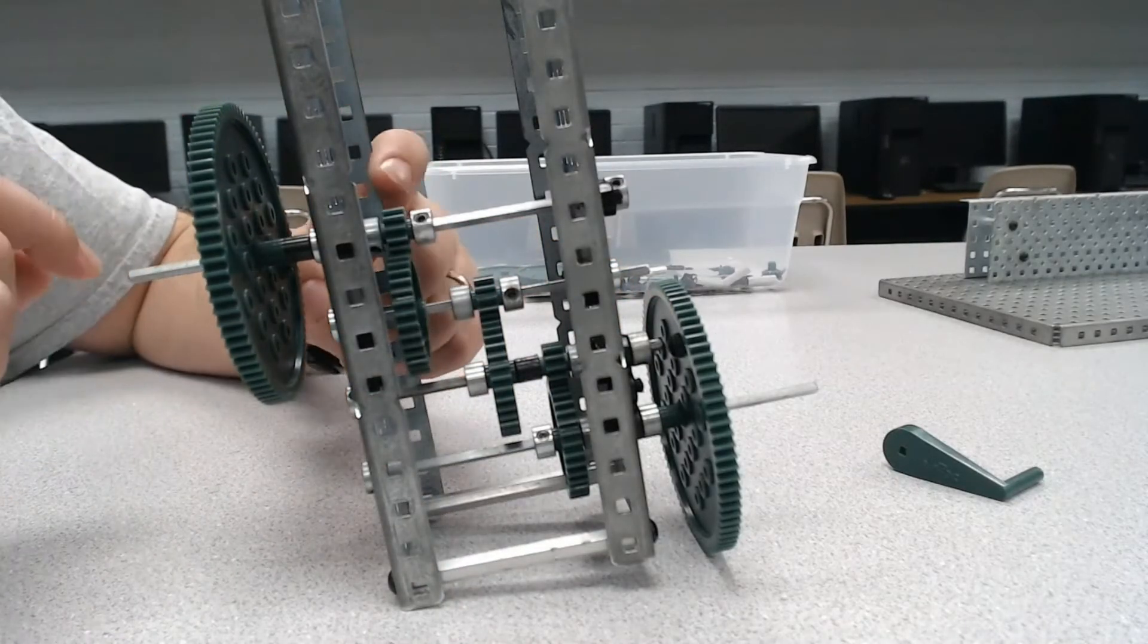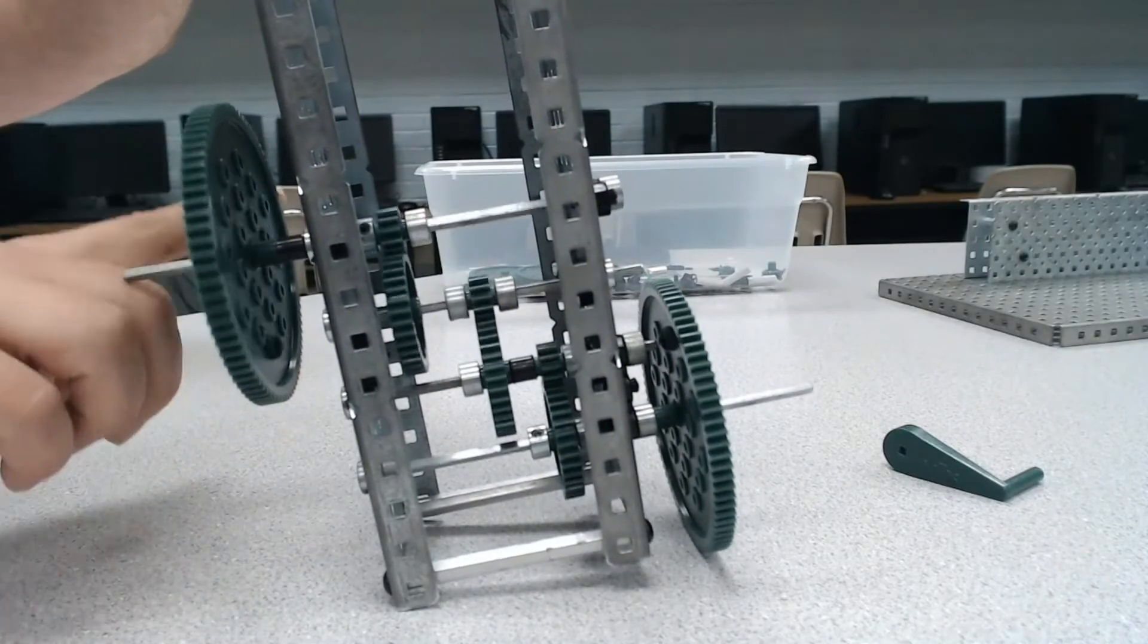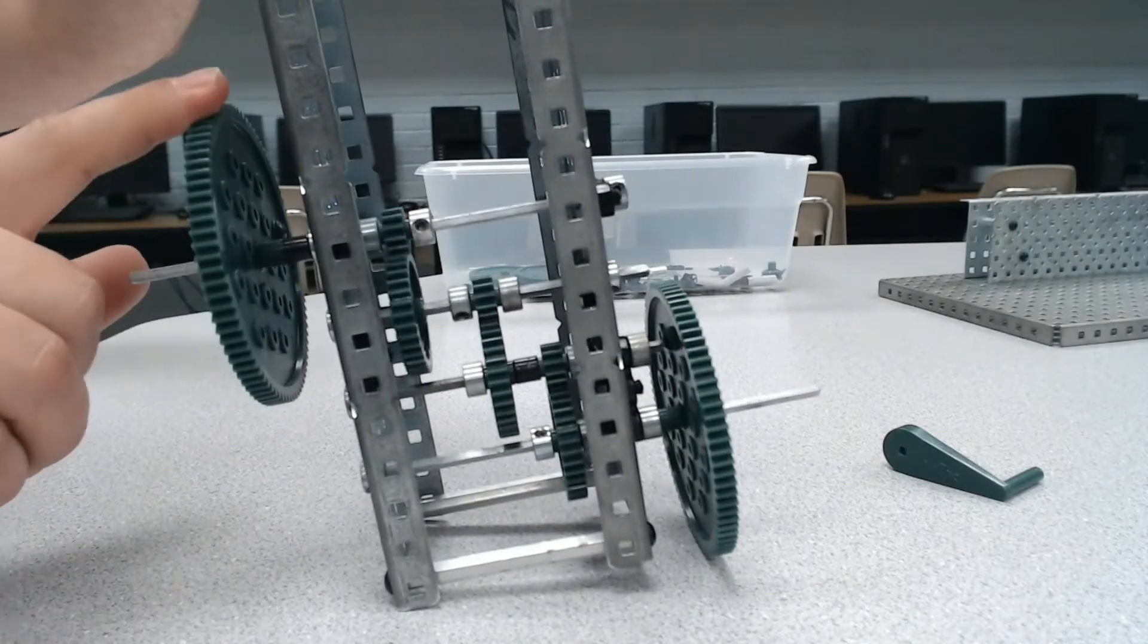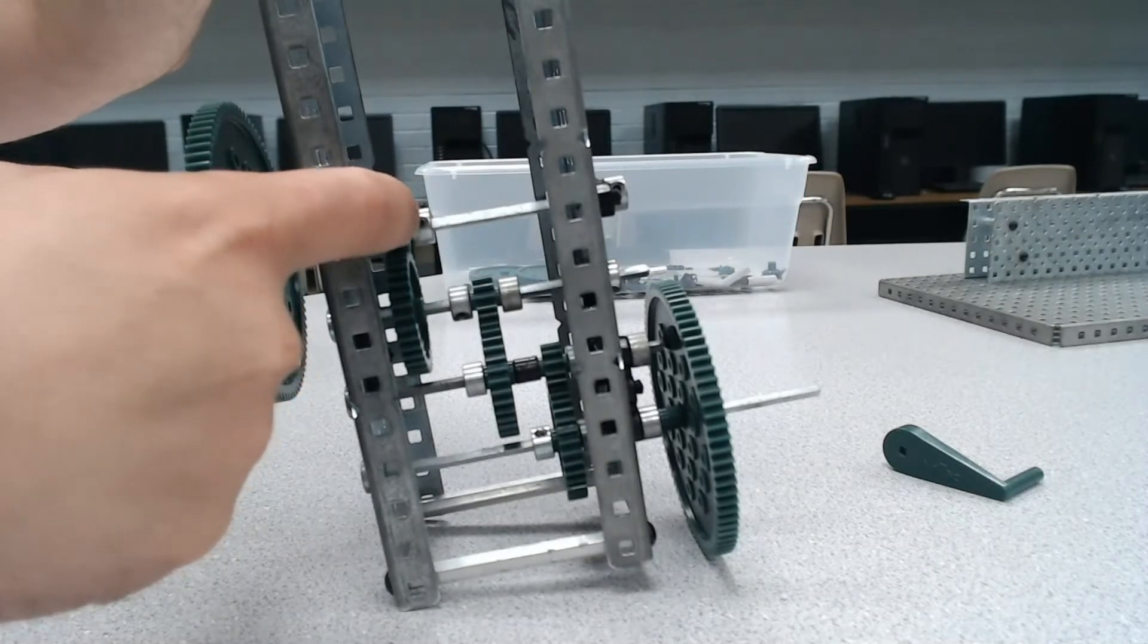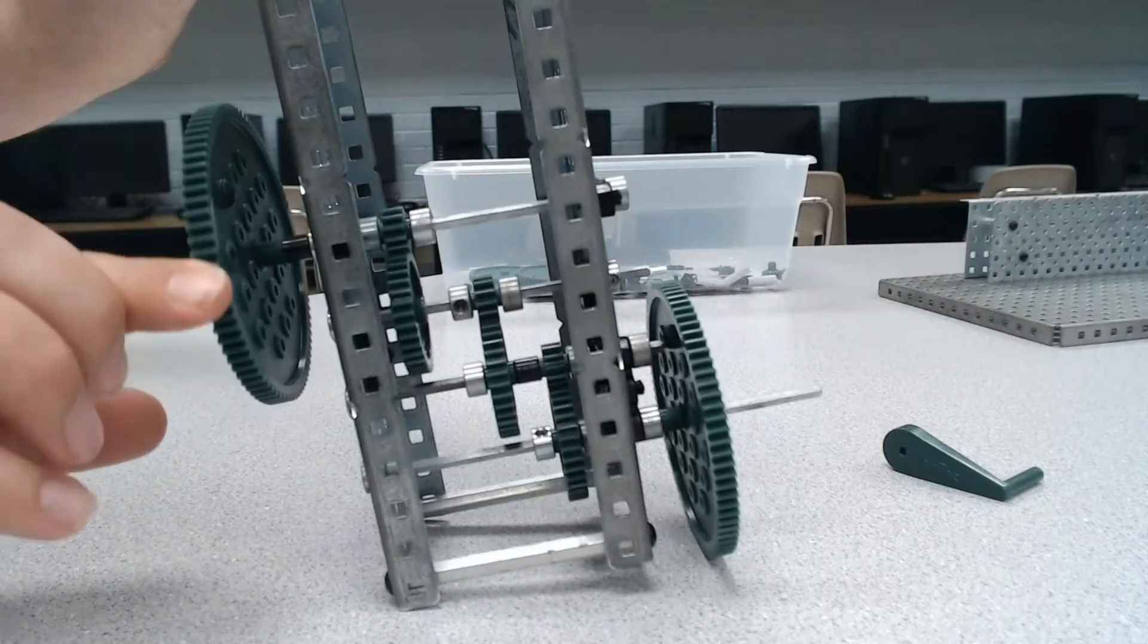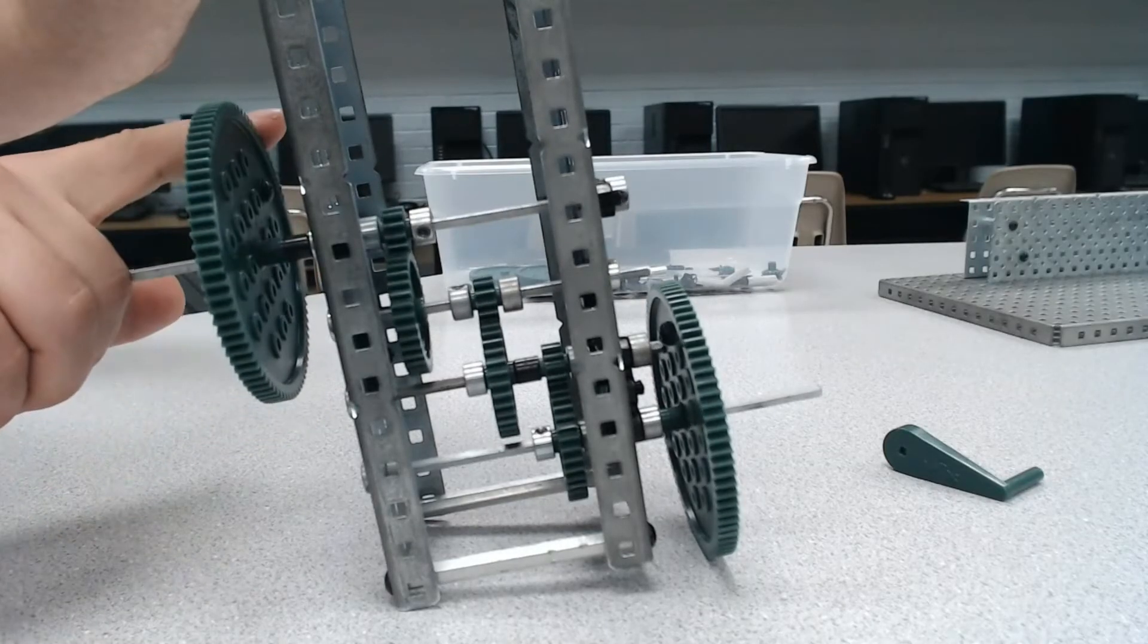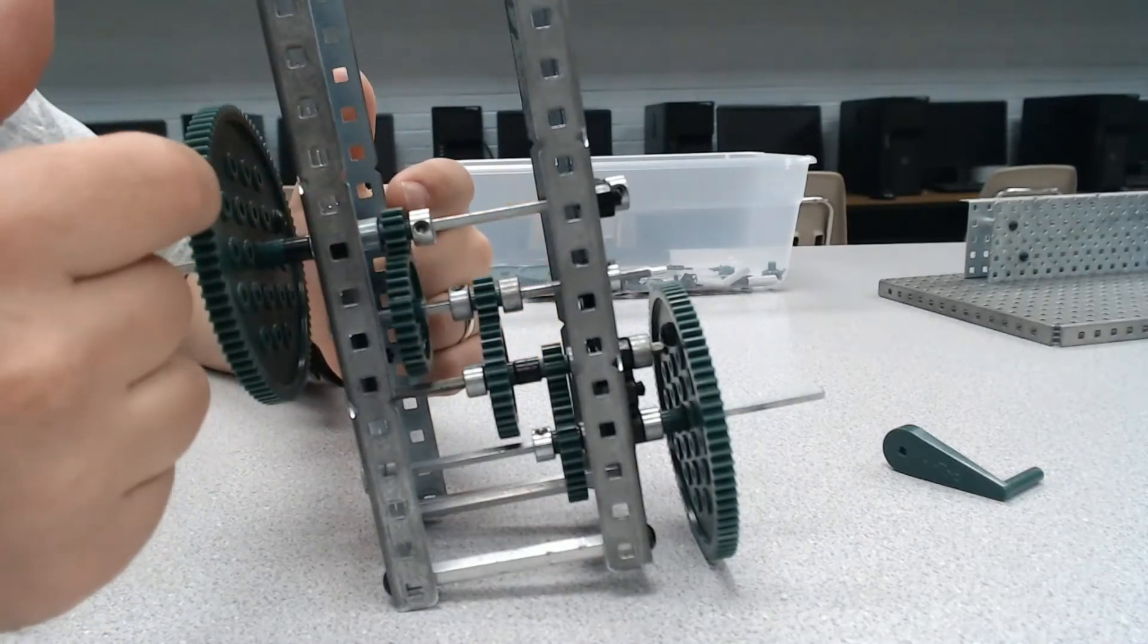One turn here results in one turn there. In fact, we can kind of see that if you were to slow it down. If we look right here at the set screw on the locking collar, and if I rotate once, you can see it only came around once. So one-to-one here.